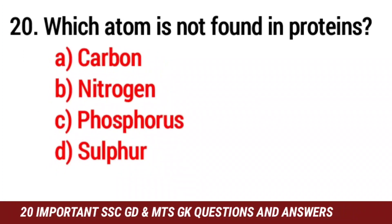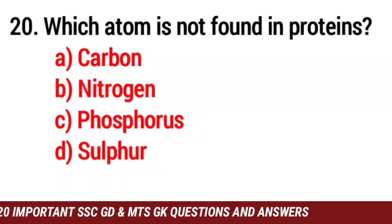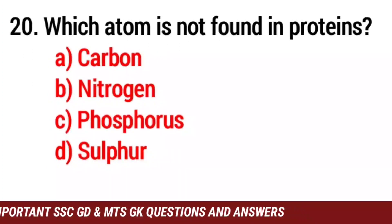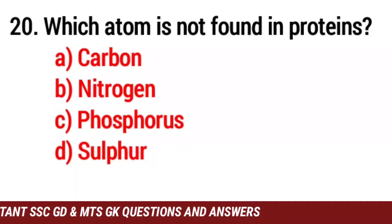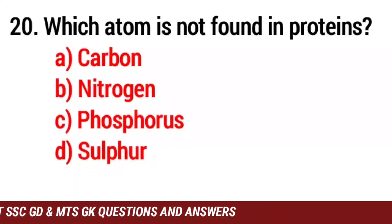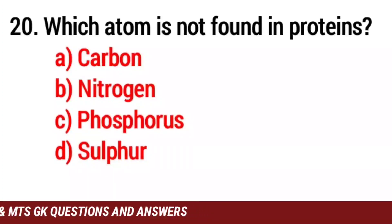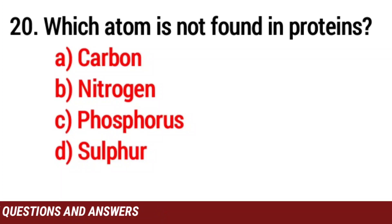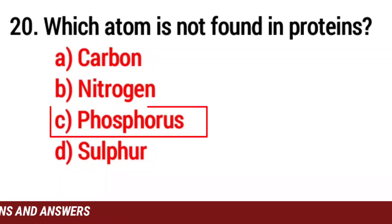Question number 20. Which atom is not found in proteins? The answer is option C. Phosphorus.